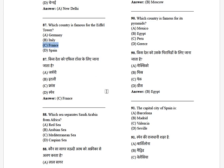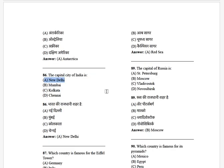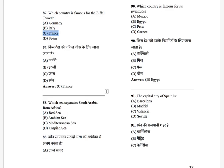Which sea separates Saudi Arabia from Africa? The options are: Red Sea, Arabian Sea, Mediterranean Sea, and Caspian Sea. The answer is the Red Sea.